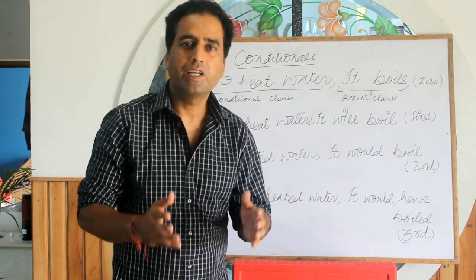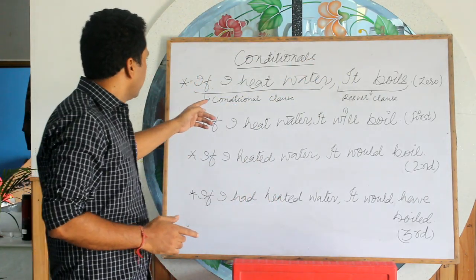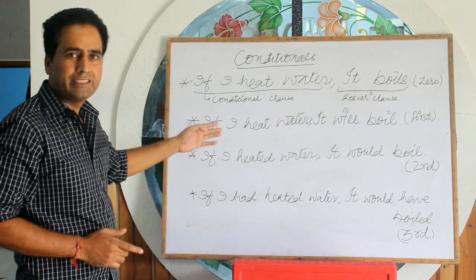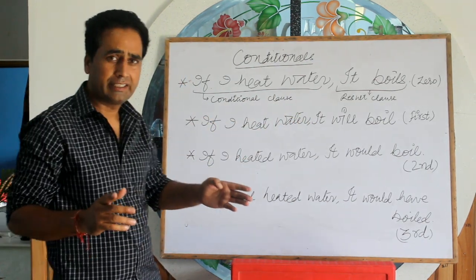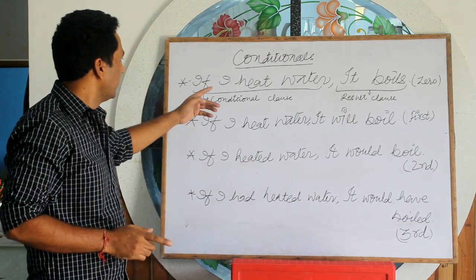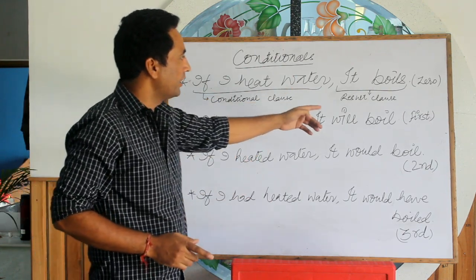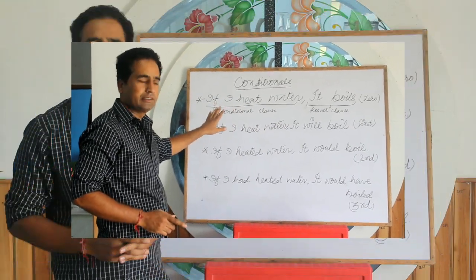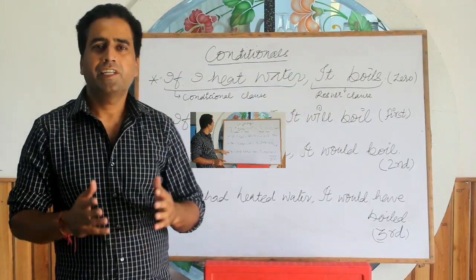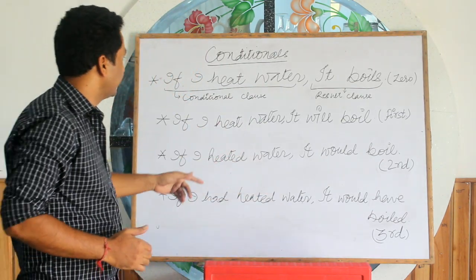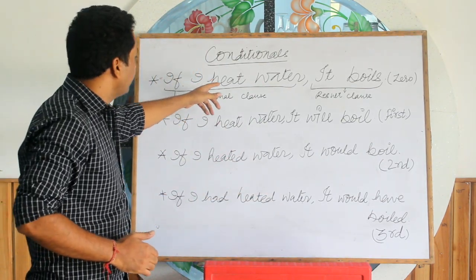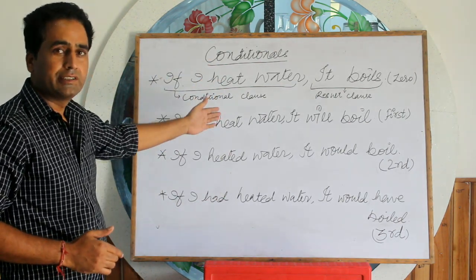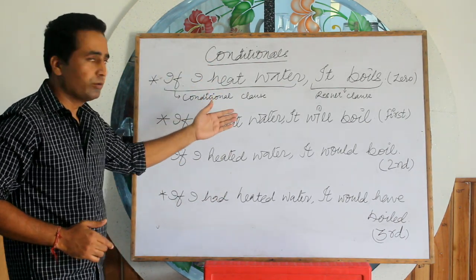In all conditional sentences, we have two clauses: the if-clause and the result clause. As you see in these examples, there is the condition clause and the result clause. The result clause cannot happen without the condition clause. Check out the verbs — this is where the main difference between these conditions lies, and the meaning is different too.